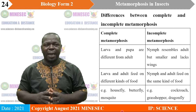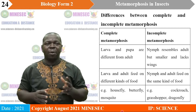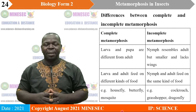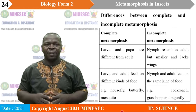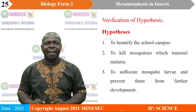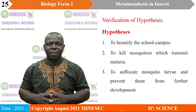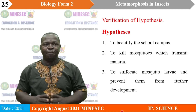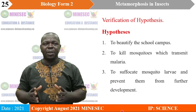Examples of organisms that undergo complete metamorphosis include housefly, butterfly, and mosquito. Whereas examples of organisms that undergo incomplete metamorphosis are cockroach, grasshopper, and dragonflies. Now let us verify our hypothesis. Why did members of the science club spray stagnant water with oil? The first hypothesis: to beautify the campus. The second hypothesis: to kill mosquitoes which transmit malaria. And the third hypothesis: to suffocate mosquito larvae and prevent them from further development.